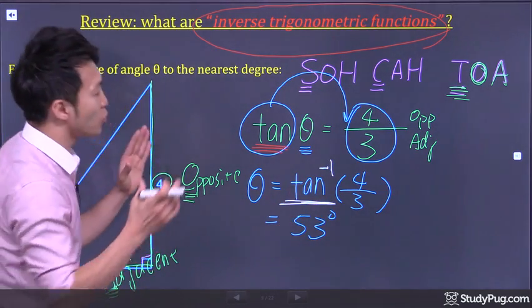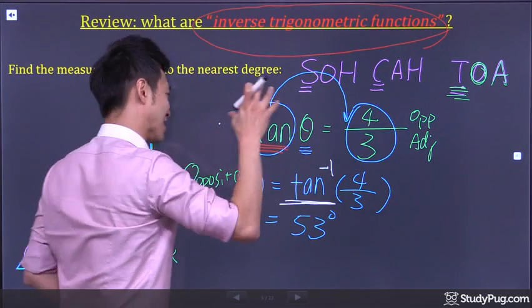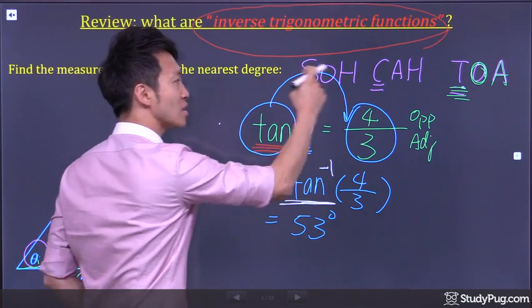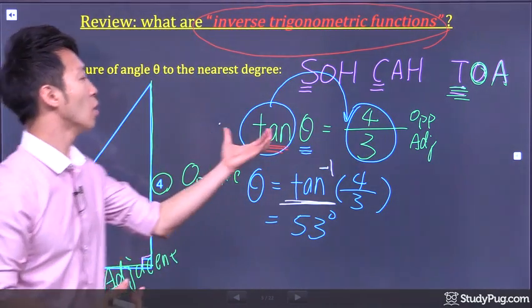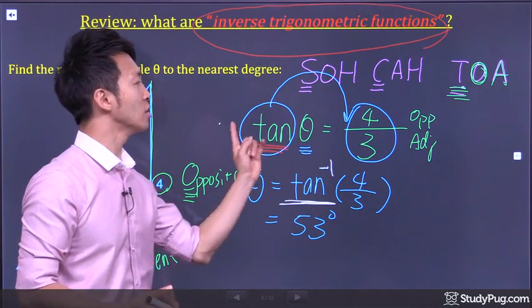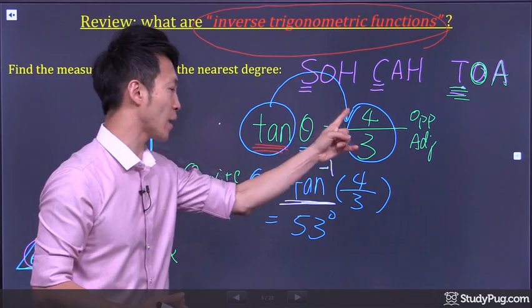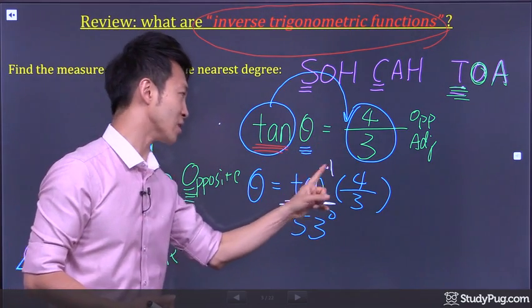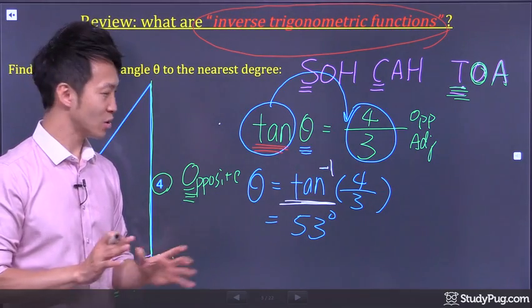See, whenever you bring a trigonometry function from one side of the equation to the other side, that trigonometry function will instantly become the inverse trigonometry function. So in this case, we brought a tangent function to the other side of the equation. That tangent function instantly became an inverse tangent function. Right? Pretty cool stuff.